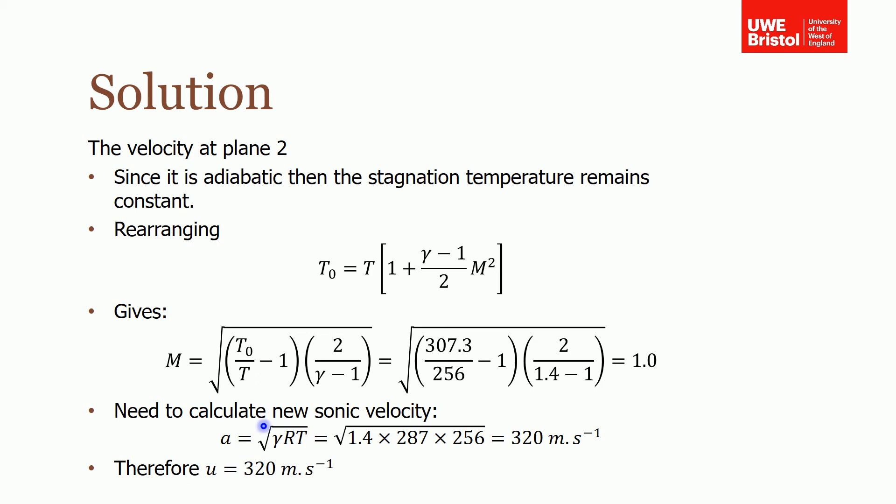We work it out again, but instead of using T as minus 2 degrees C, we use minus 17 degrees C. We plug in the values: 1.4 times 287, the gas constant, times 256.